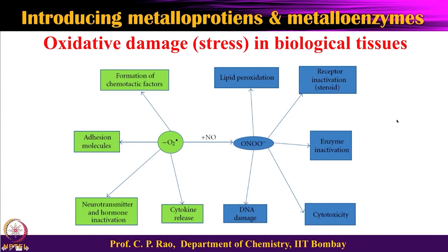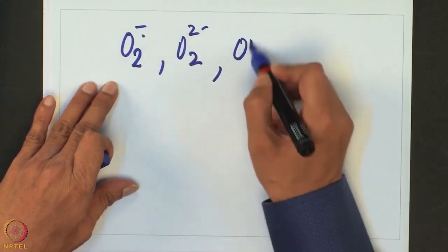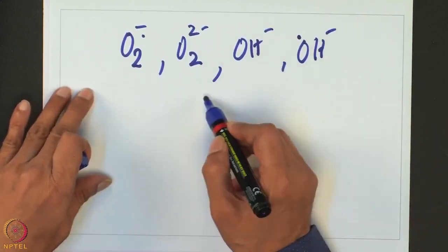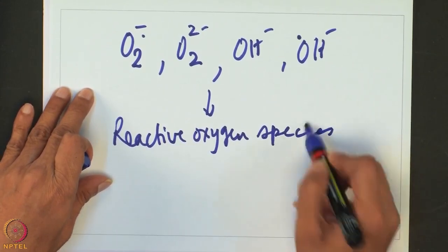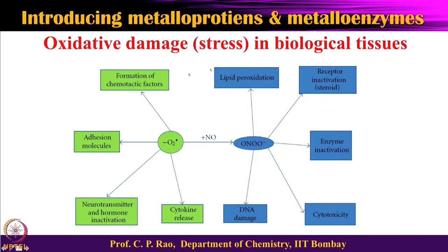All of this is referred to as reactive oxygen species, most commonly abbreviated as ROS. The reactive oxygen species include O2 minus dot, O2 minus, OH minus, OH dot, and similar species. ROS is an important terminology — these reactive oxygen species cause damage to tissue cells, and that damage is referred to as oxidative stress.